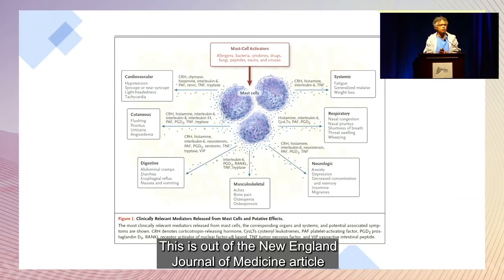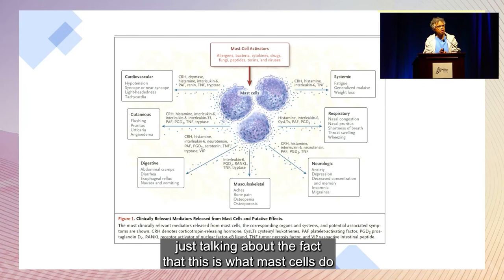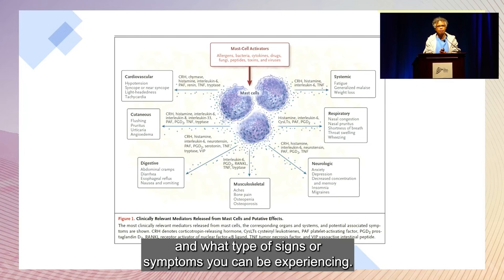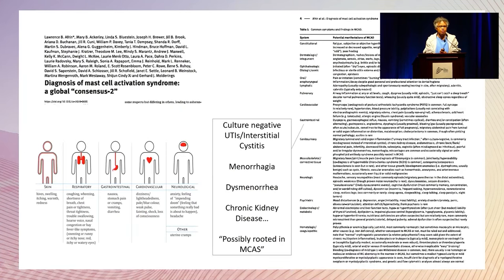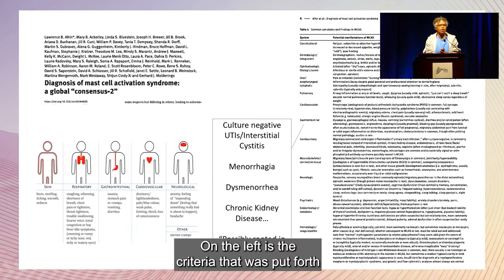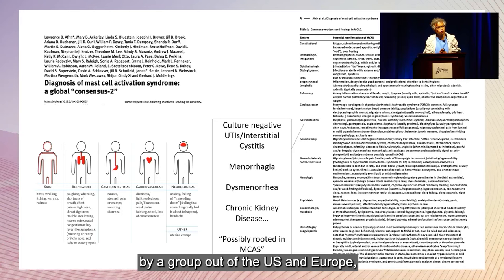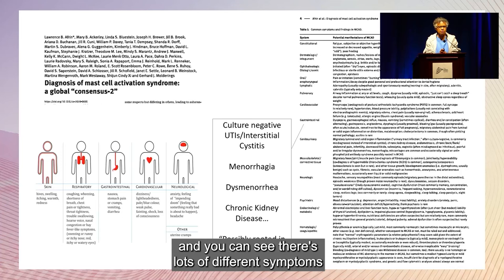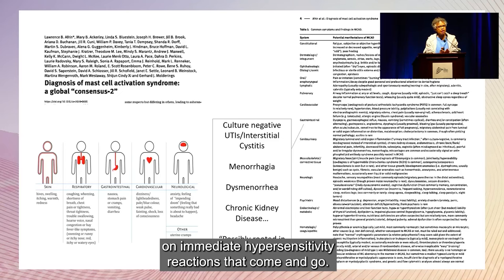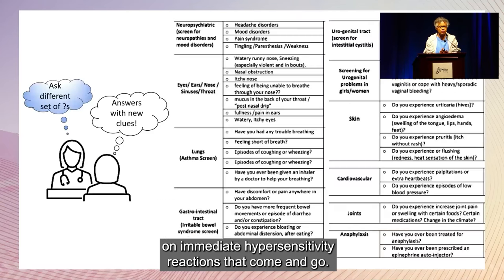This New England Journal of Medicine article discusses what mast cells do and what type of signs or symptoms you can experience. The criteria put forth by a group from the U.S. and Europe shows lots of different symptoms and signs. I'm going to focus on immediate hypersensitivity reactions that come and go.